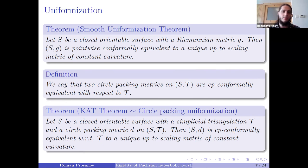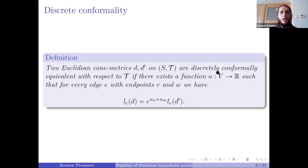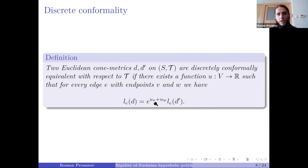In order to give a good discretization of the smooth uniformization theorem, we need to provide a framework of discrete conformality for arbitrary con metrics. To this purpose it seems very reasonable to try to discretize the metric definition of smooth conformality. One can proceed as follows: consider two Euclidean con metrics on a surface with triangulation and say they are discretely conformally equivalent with respect to the triangulation if there is a weight function on vertices and the edge lengths change in the following manner, imitating the conformal change of metrics for smooth metrics.